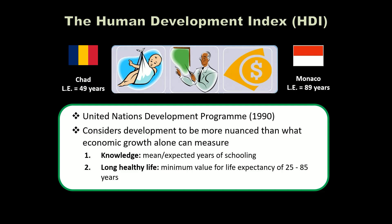The HDI considers: first, knowledge — evaluated as the mean expected years of schooling, so how long the average person in that country goes to school. Second, long healthy lives — a well-developed country should have knowledgeable citizens living long healthy lives. The US life expectancy is around 77–78 years.